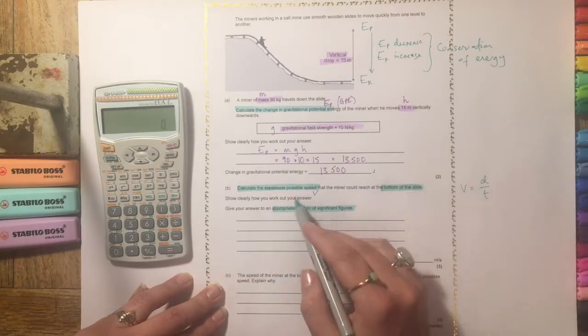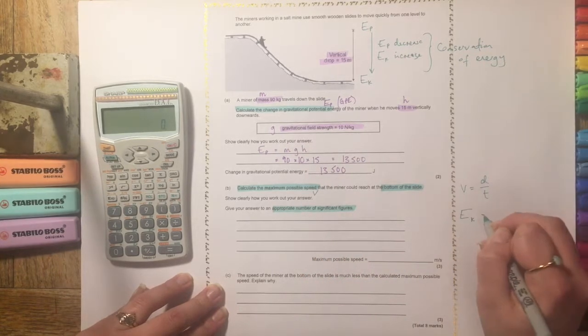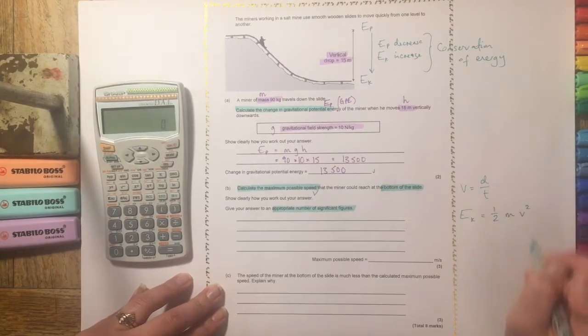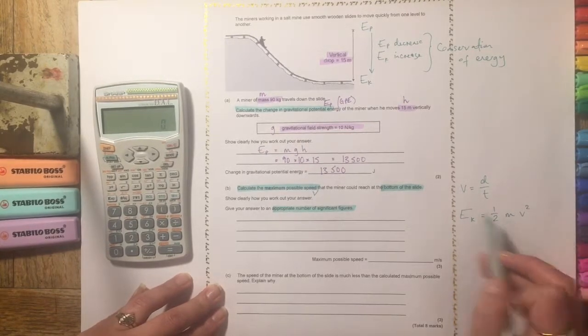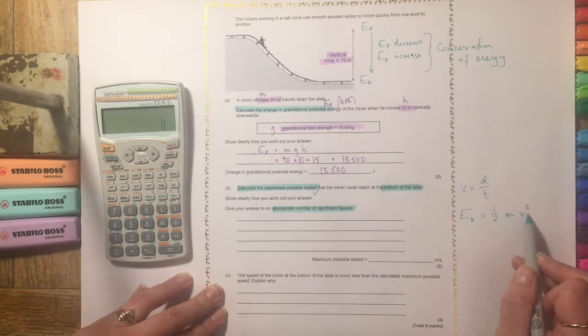So then we need to think about what is our equation for gravitational potential energy? And hopefully we remember that Ek is a half mv squared. So m is mass and we've got mass up here. And then v is what we want to find out.